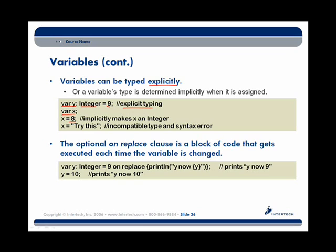Here we're doing implicit typing. Just because we're allowing implicit typing doesn't mean the type can change. For example, trying to set X equal to a string value creates problems — that's going to create an incompatible type and a syntax error.